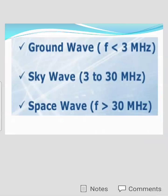These are the frequency ranges of propagation methods. If radio frequency signals have a frequency less than 3 MHz, then we use ground wave propagation. If the frequency of the radio waves is between 3 MHz and 30 MHz, then we use sky wave propagation. If the frequency is greater than 30 MHz, then we use space wave propagation.